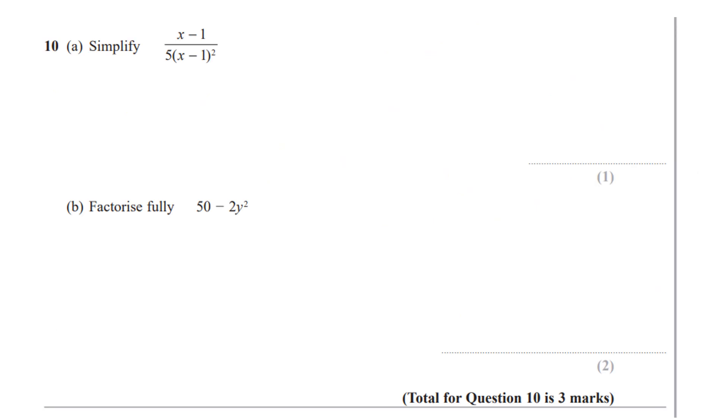Question 10 now, so 10a. Simplify this algebraic fraction. So we're going to cancel down some terms. I can rewrite this as x minus 1 all over 5 lots of x minus 1 times x minus 1.